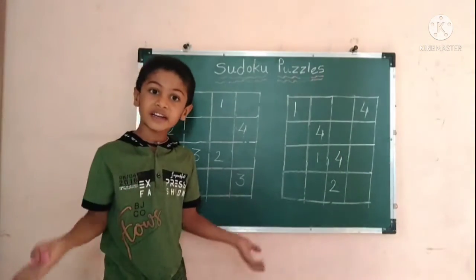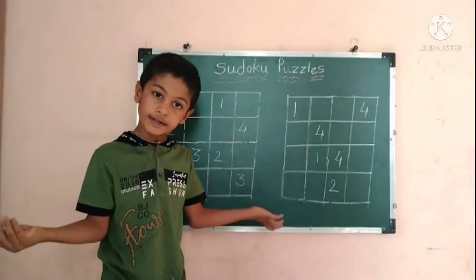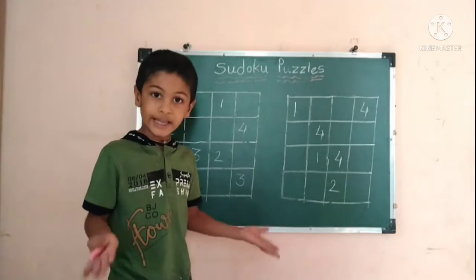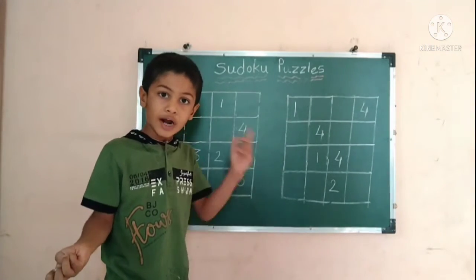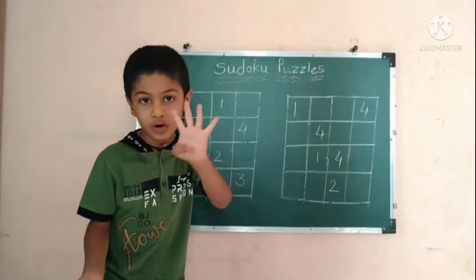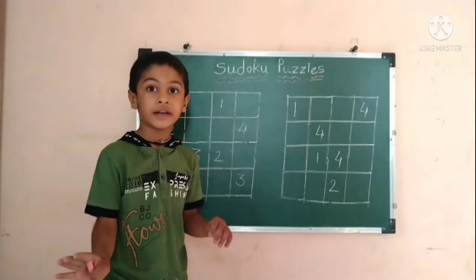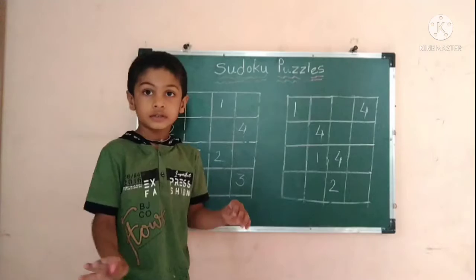Similarly, each subgrid can have one to four numbers. No number can be repeated in a subgrid.